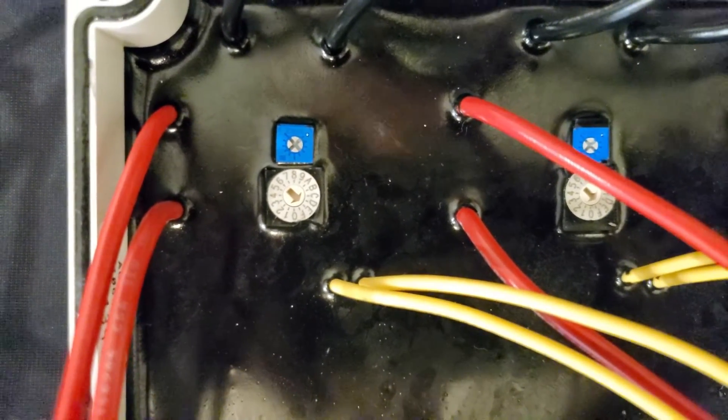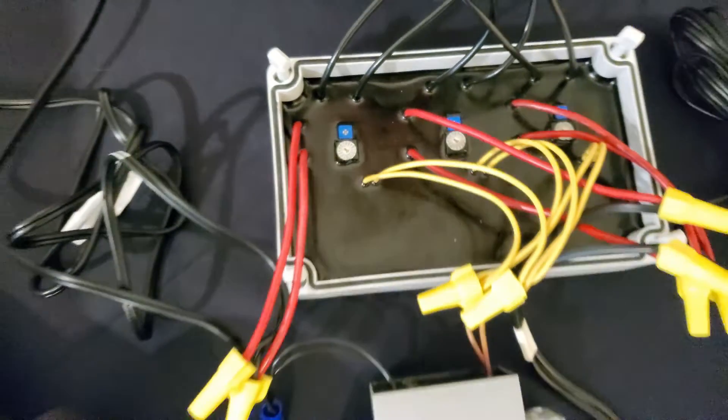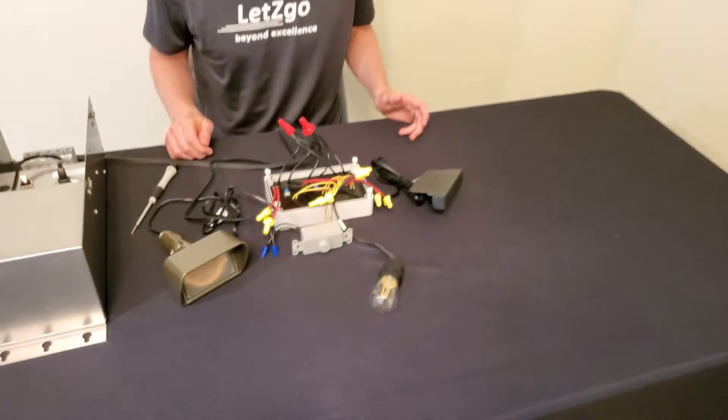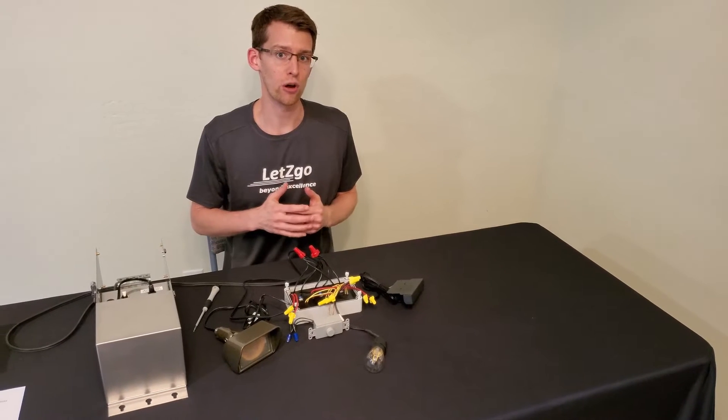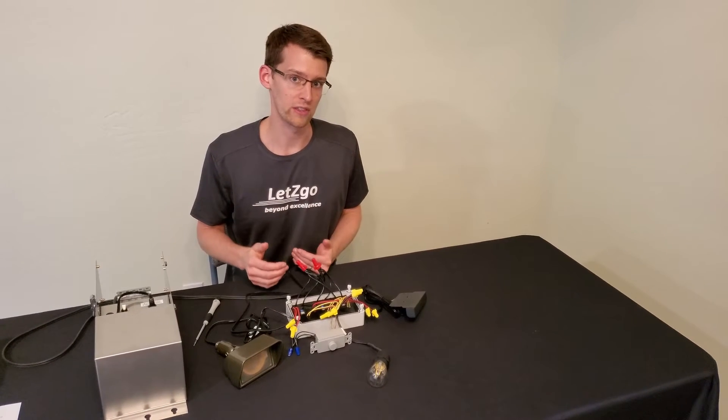This is Matt with Let's Go Products and now I'm going to demonstrate Mode E of our three-channel landscape lighting zone controller. This mode allows you to dim a large amount of lights all with a single knob.